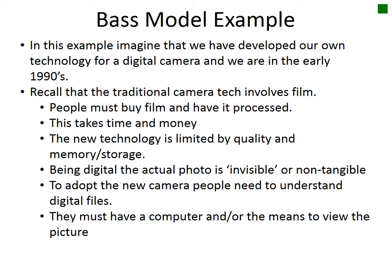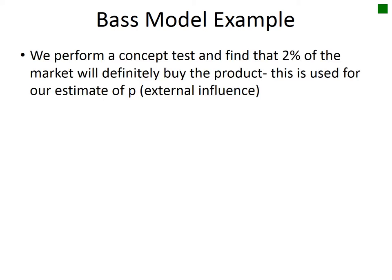So moving forward, we've developed a technology to be able to create this camera. We did some market testing. And so after our market tests or concept tests, we realized, or we measured the amount of people or percentage of the market that would buy the product right away, that would definitely buy the product. And so what we're going to do is we're going to use that number, the percentage of the market off of the concept test, as our estimate for P, the external influence of our model. So 0.02 will be what we use.